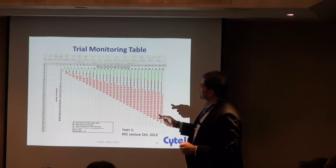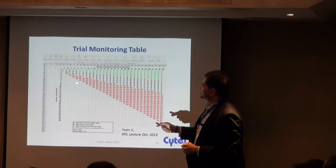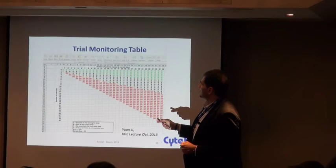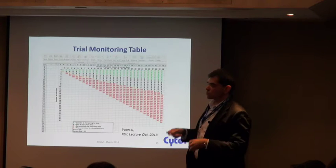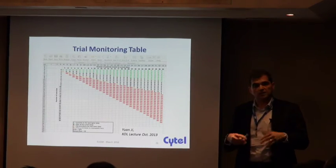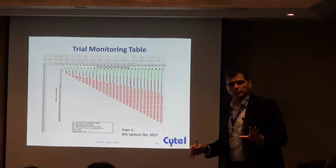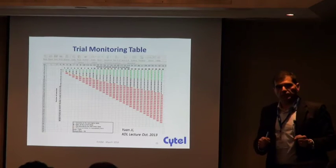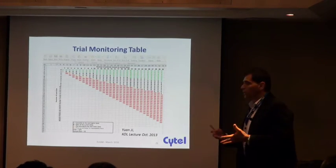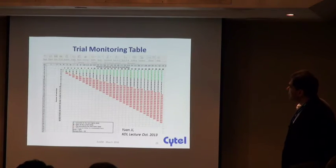The idea is to show the clinician something like a trial monitoring table — for example, if you have 12 subjects and observe six toxicities, the decision is to de-escalate; five toxicities means stay at the current dose; seven toxicities means de-escalate and never visit that dose level again, declaring it unacceptable. Presenting something like this is appealing in terms of implementing it in a trial.